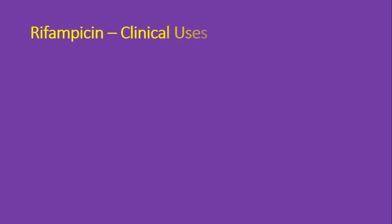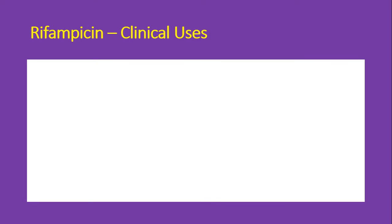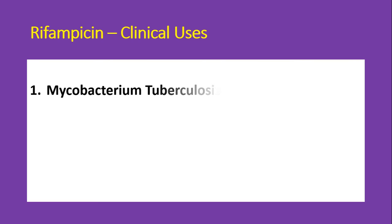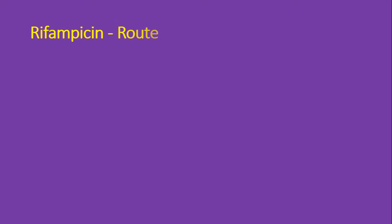Moving on to the clinical uses of rifampicin: it is used in the treatment of Mycobacterium tuberculosis as well as the treatment of leprosy. Coming to the route of administration and important pharmacokinetic properties, it is administered through the oral route.